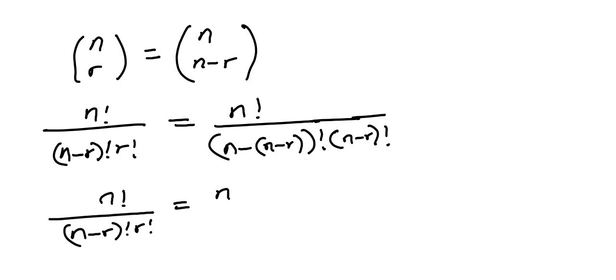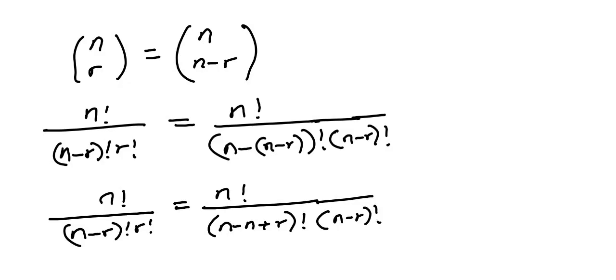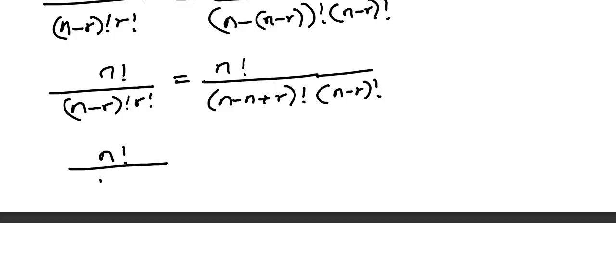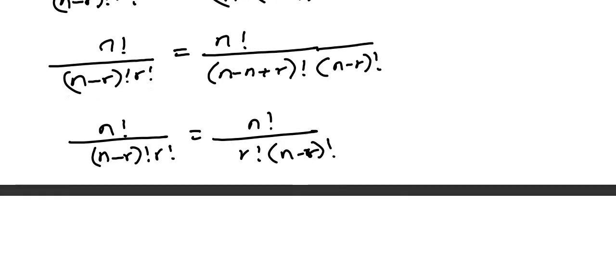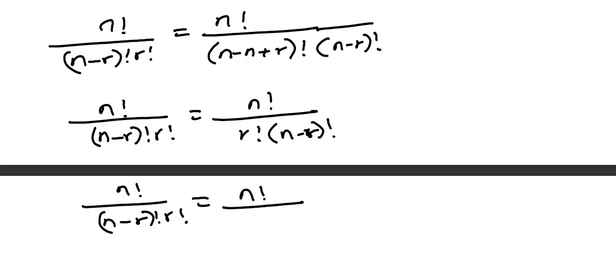On the left we have n factorial over (n minus r) factorial times r factorial. On the right, n minus n disappears and we just remain with r factorial. So both sides give n factorial over (n minus r) factorial times r factorial. We just interchange the terms in the denominator on the right so you can see they look alike.